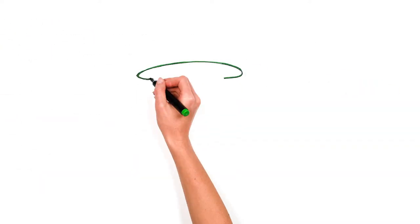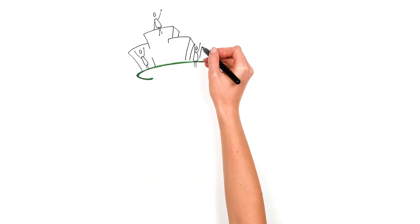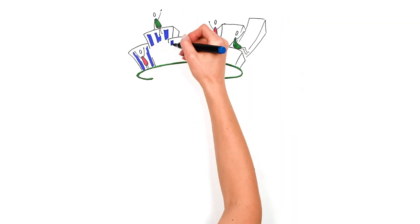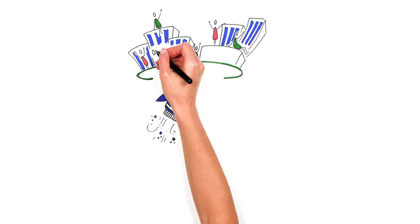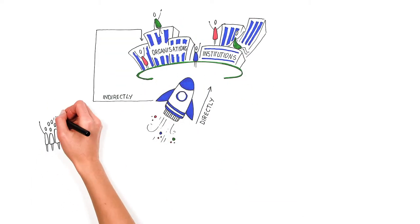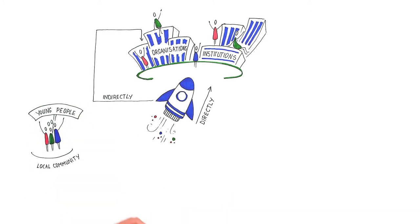A solid dissemination strategy includes all measurements for targeted field, organizations, and individuals, meaning how many people, organizations, and institutions you're targeting directly and indirectly. Possible target groups could be young people in your local community, your country, or even Europe.